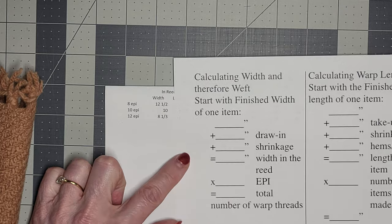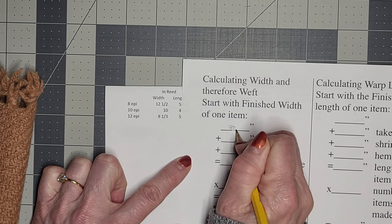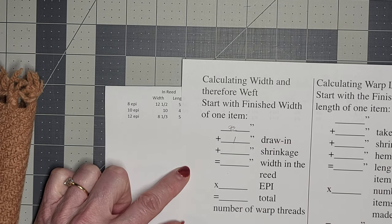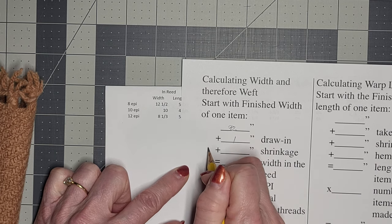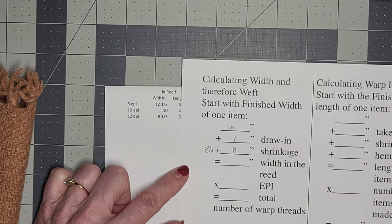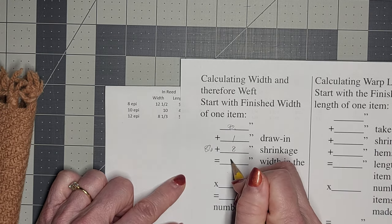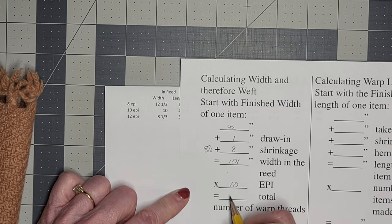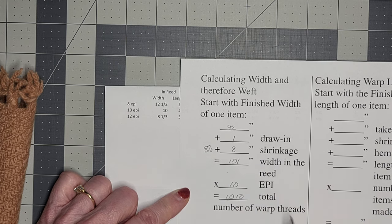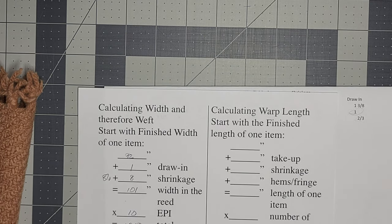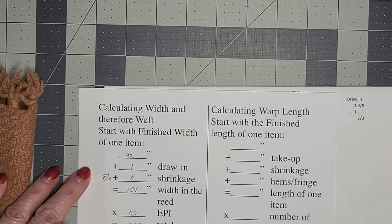So the width of my blanket is going to be 92 inches and then I'm going to have one inch of draw-in and my shrinkage rate is about 8%. Eight percent of 92 is 7.44 so we're just going to round it up to eight inches. So the width in my reed is going to be 101 inches. I have 10 ends per inch and so that is 1,010 ends.